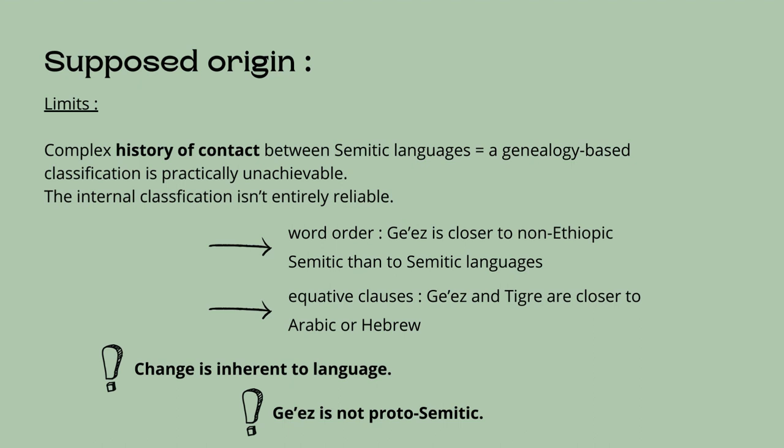It is important to keep in mind that influence from neighboring languages isn't the only impeding factor to a genealogic classification, as languages undergo changes with or without external influence, such as in the case of grammaticalization. Proto-Semitic is the hypothetical reconstructed proto-language ancestral to the Semitic languages. Ge'ez was believed to be the common ancestor of the Ethiopian-Semitic languages, but this was argued against by linguist Robert Hetzron and others. Most modern languages of Ethiopia are assumed to have already been spoken at the time Ge'ez was coming into existence, and Ge'ez contains a number of innovations with respect to Semitic not shared by Tigre and Tigrinya.